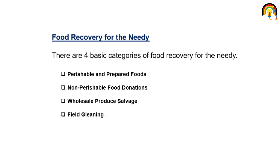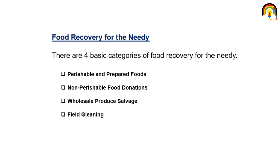Food recovery for the needy has four basic categories. One: perishable and prepared food — the collection of food waste during food stages at facilities such as restaurants, food caterers, supermarkets, hospitals, nursing homes, schools, etc., and distribution to the needy through national groups such as food chains. Two: non-perishable food donation — collection of processed food with a long shelf life distributed through networks such as Second Harvest. Three: wholesale produce salvage — collection of fresh fruit and vegetables at local or regional wholesale, distributed through networks such as the Society of Andrew. Four: field gleaning — collection of crops from fields already harvested mechanically or where harvesting is not feasible, also distributed through networks such as the Society of Andrew.